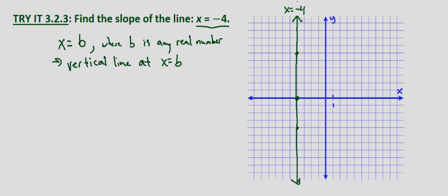Now the slope of any horizontal line is 0. The slope of x equals negative 4 is... the slope is undefined.